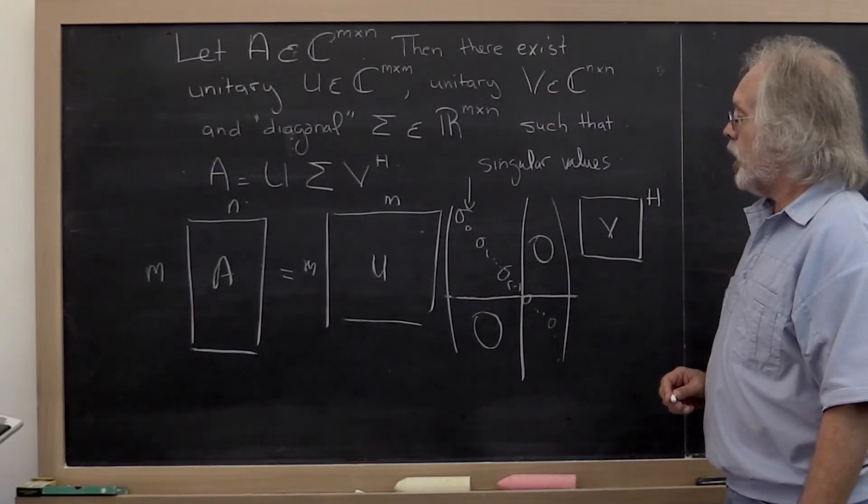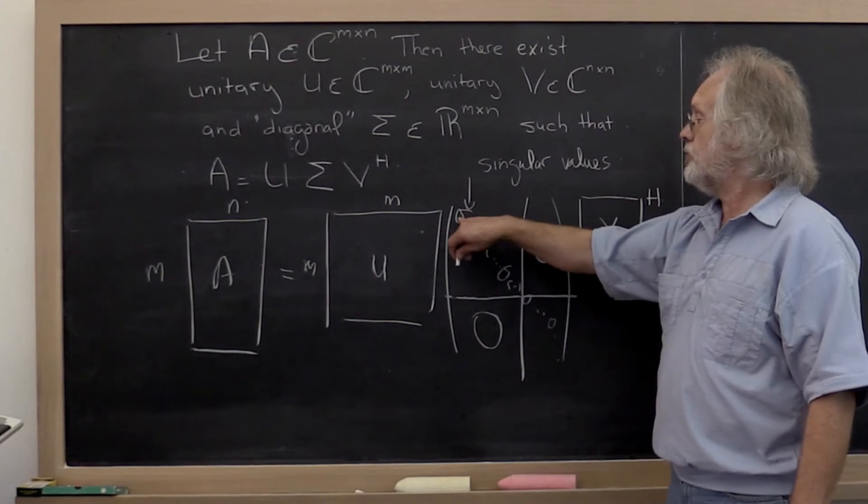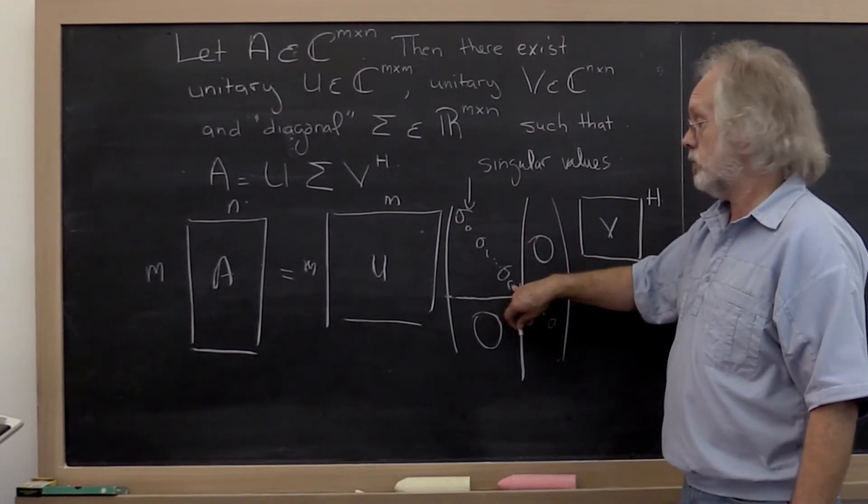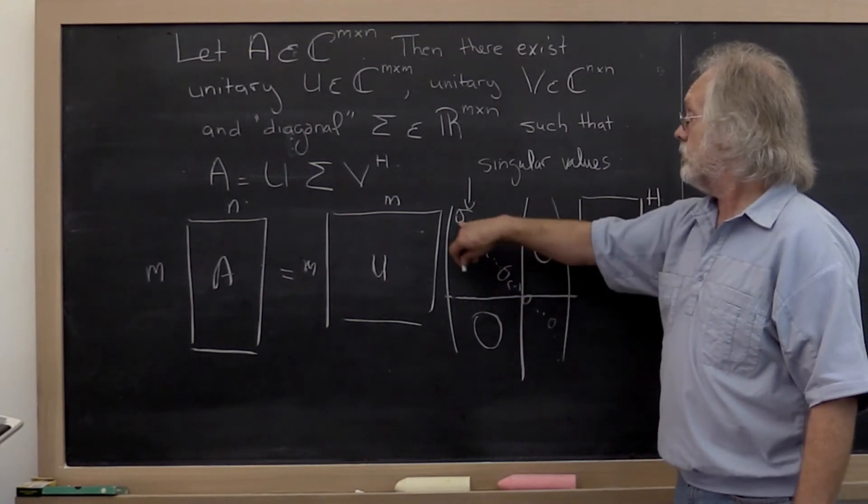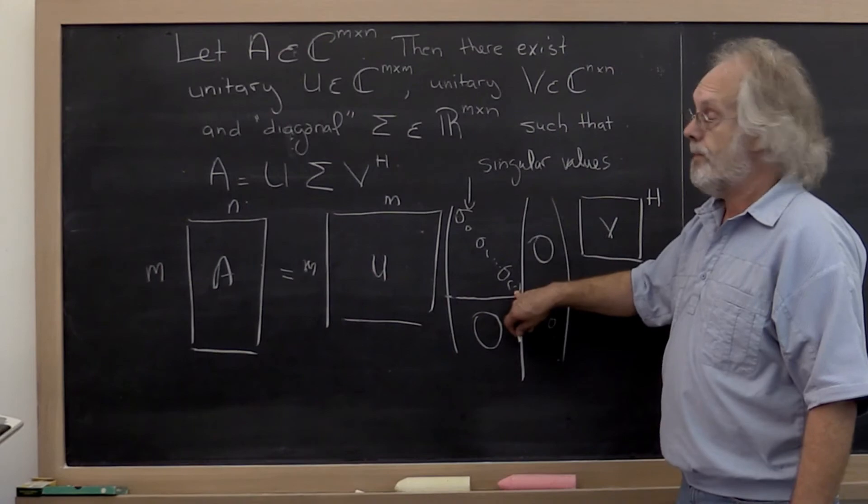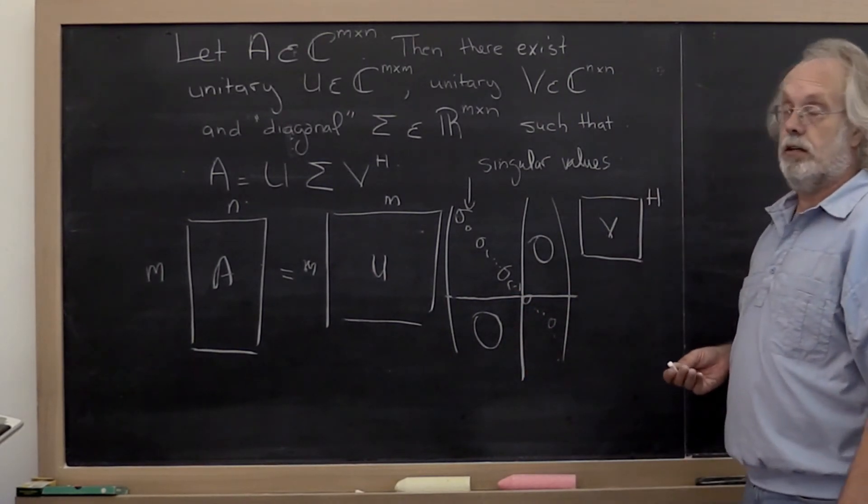And we're going to assume always that the singular values are ordered from largest to smallest. They're all positive, ordered from largest to smallest. And that's the singular value decomposition.